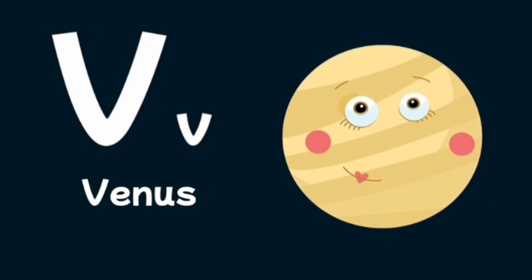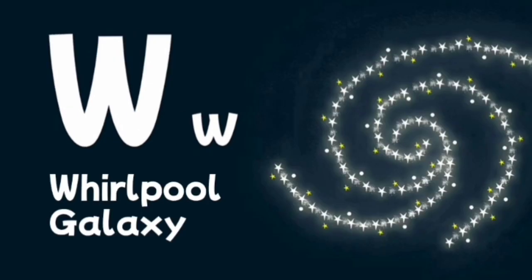V is for Venus, the hottest planet and closest to Earth. W is for Whirlpool galaxy, a spiral galaxy that can be seen from Earth with a small telescope.